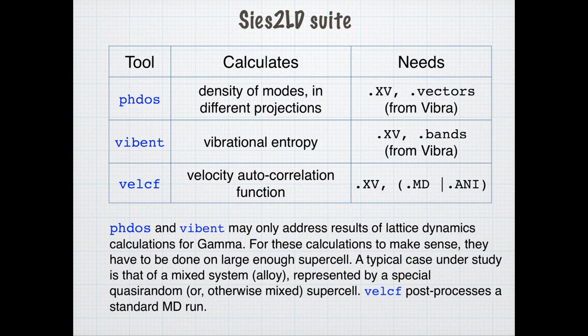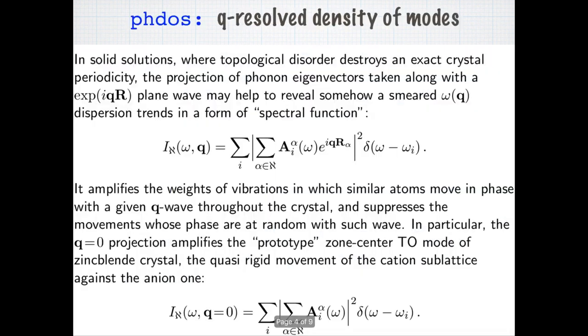The tools we will briefly cover in this introduction are PHDOS for extracting the density of vibration modes and organizing their projection according to different criteria, the second tool is Viband which performs calculation of the contribution to vibration entropy from the given phonon spectrum, and finally the tool VLC-Phi which permits to calculate the velocity autocorrelation function and to make its Fourier transform. We start with the discussion of PHDOS.